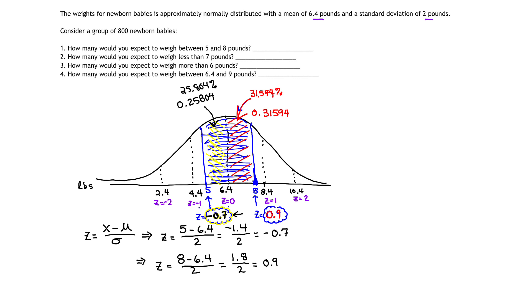So if I want to find the total probability in between 5 pounds and 8 pounds, what am I going to do? I'm going to add up those two numbers. I'm going to take 0.25804. I'm going to add to it the other side, which is 0.31594. And when I add the percentage in the yellow band with the percentage in the red band, that's going to give me a total of 0.57398.